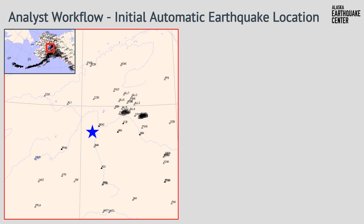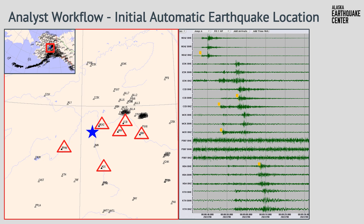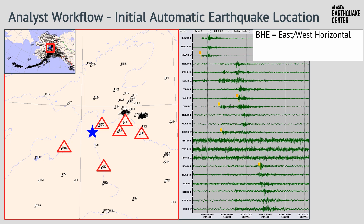Now we're ready to tackle some real data. The blue star is an automatically located earthquake in interior Alaska, recorded by seismic stations shown as red triangles. If we pull the waveforms for this earthquake, we have a data panel that looks like this. In this data view, we can see groupings of three with each station acronym. The top trace is the east-west horizontal ground motion recording, the middle trace is the north-south horizontal ground motion recording, and the bottom trace is the vertical ground motion recording, making up a complete record from the three-component seismometer installed at that station.